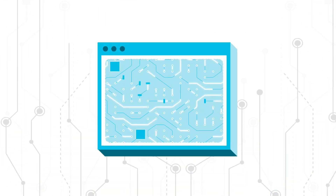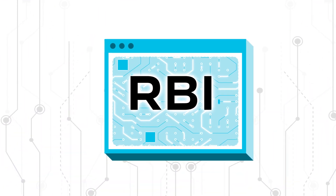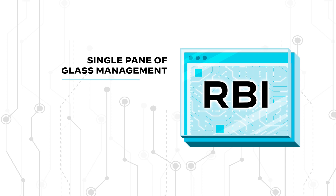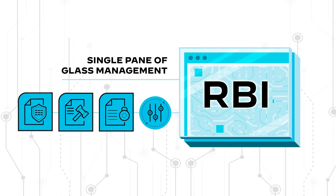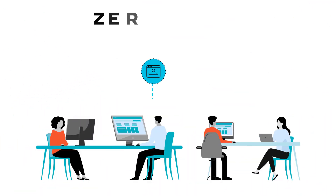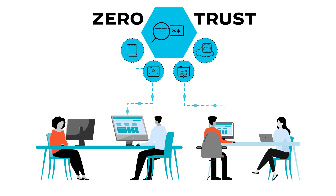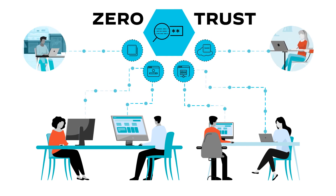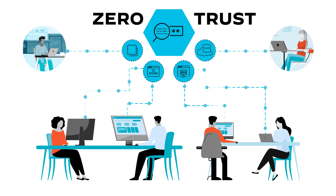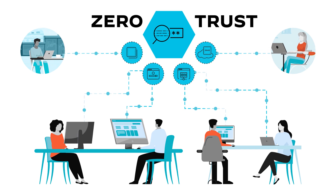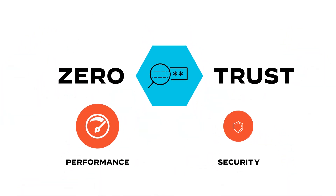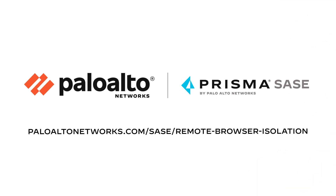Simple to deploy and use, RBI also provides a single pane of glass management for uniform policy creation and enforcement. Extend zero-trust to everything users do on the internet and in SaaS applications, with a natively integrated security solution that doesn't make you choose between performance and security. That is remote browser isolation from Palo Alto Networks.